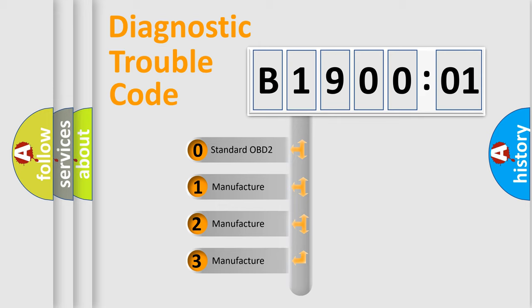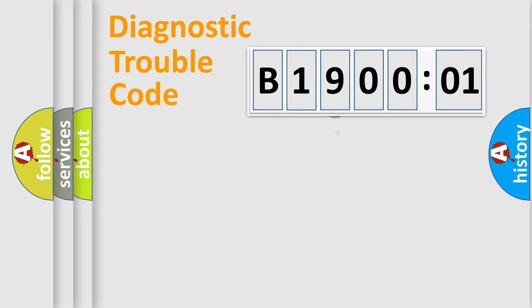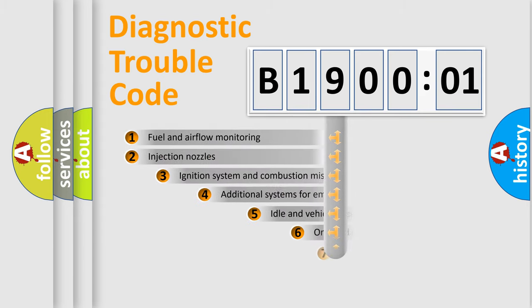If the second character is expressed as zero, it is a standardized error. In the case of numbers 1, 2, or 3, it is a more specific expression of the car-specific error.